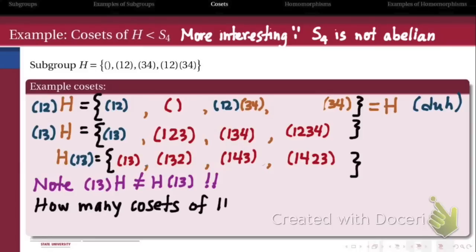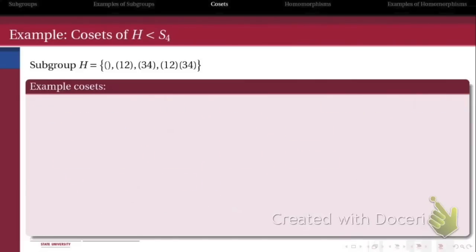So a valid question here is, well, how many cosets of this particular H are there inside of S4? In other words, what is the index of this subgroup H inside of the group S4? The most brutal way to do that is to just try listing them all. So let's list the left cosets and the right cosets of H when we operate on them by various sets of elements.